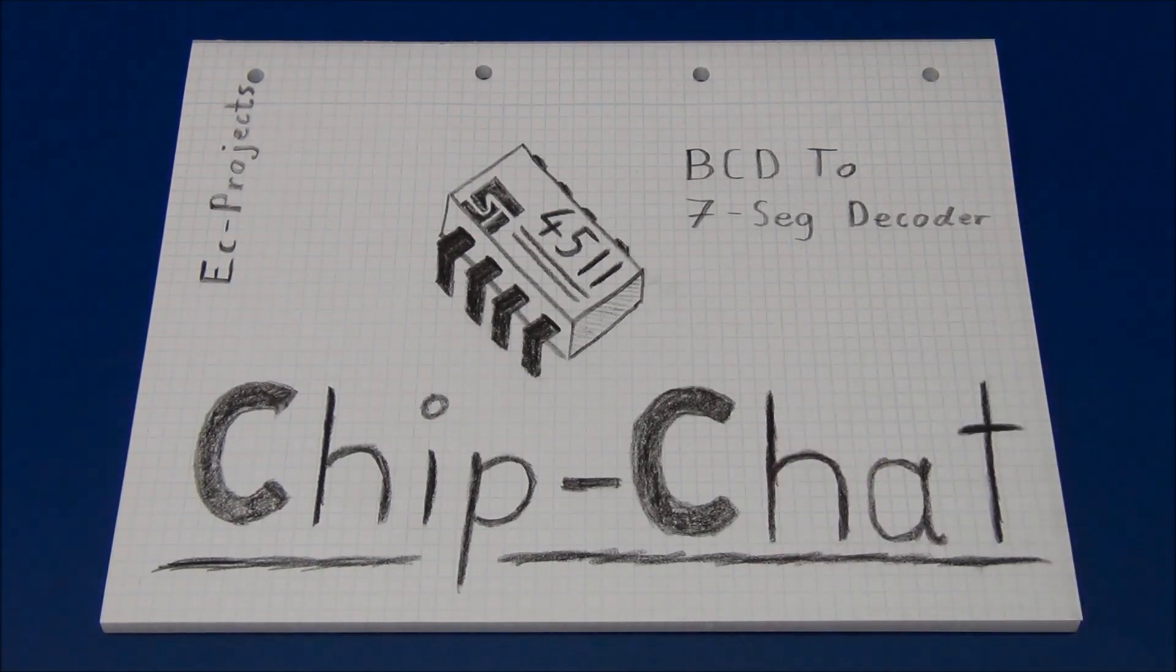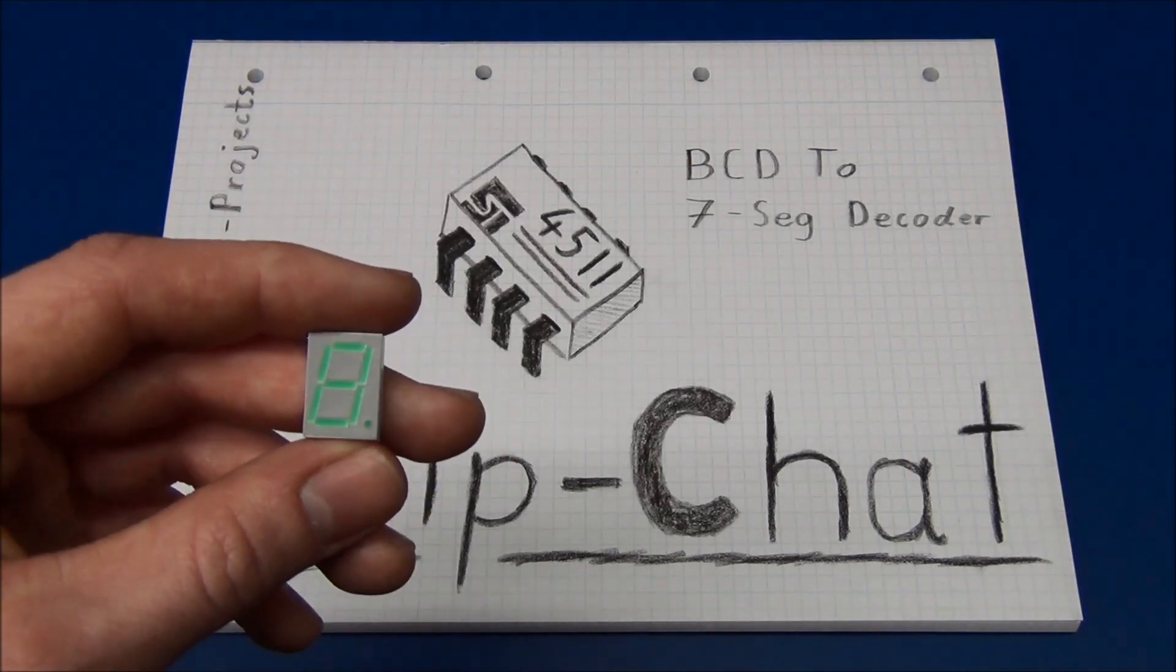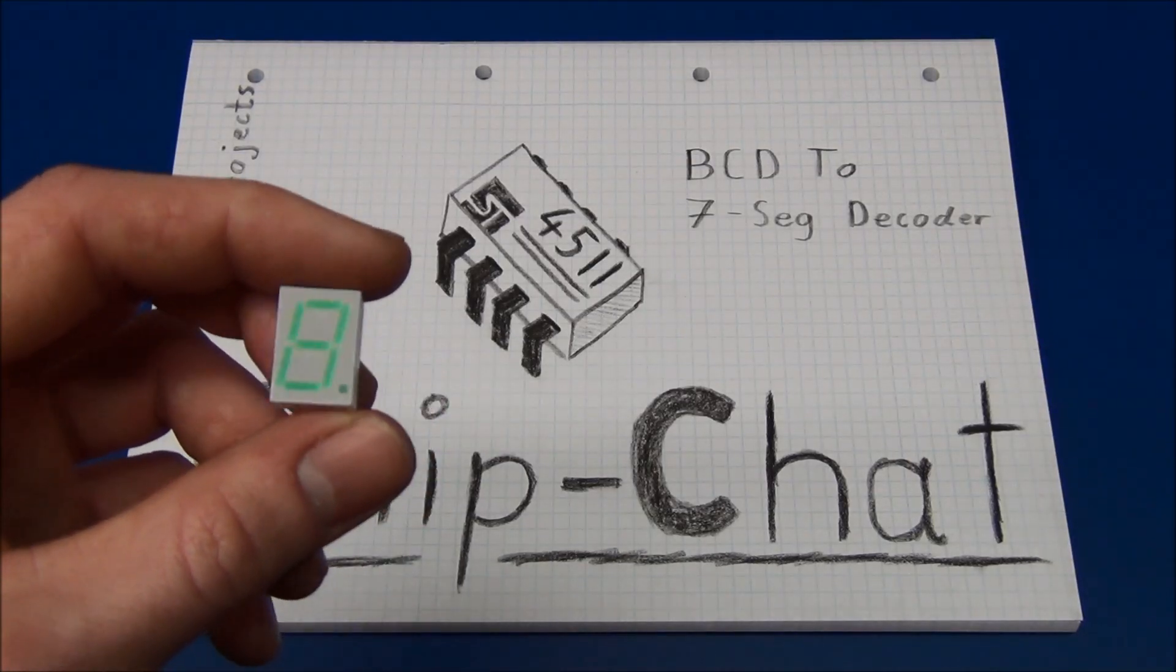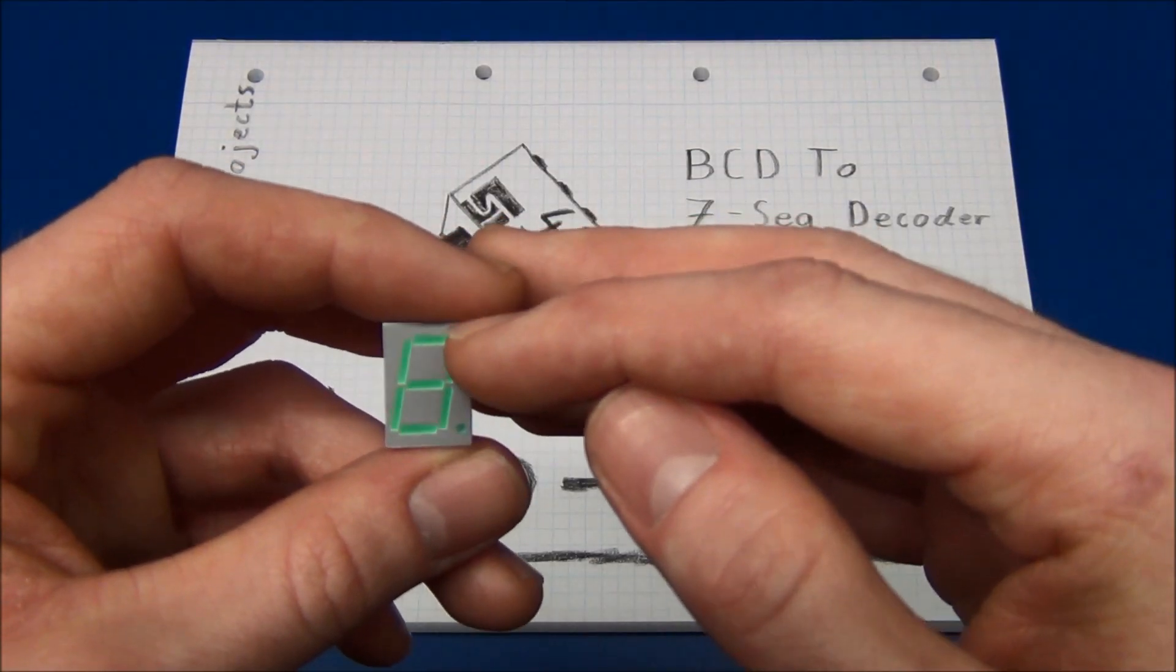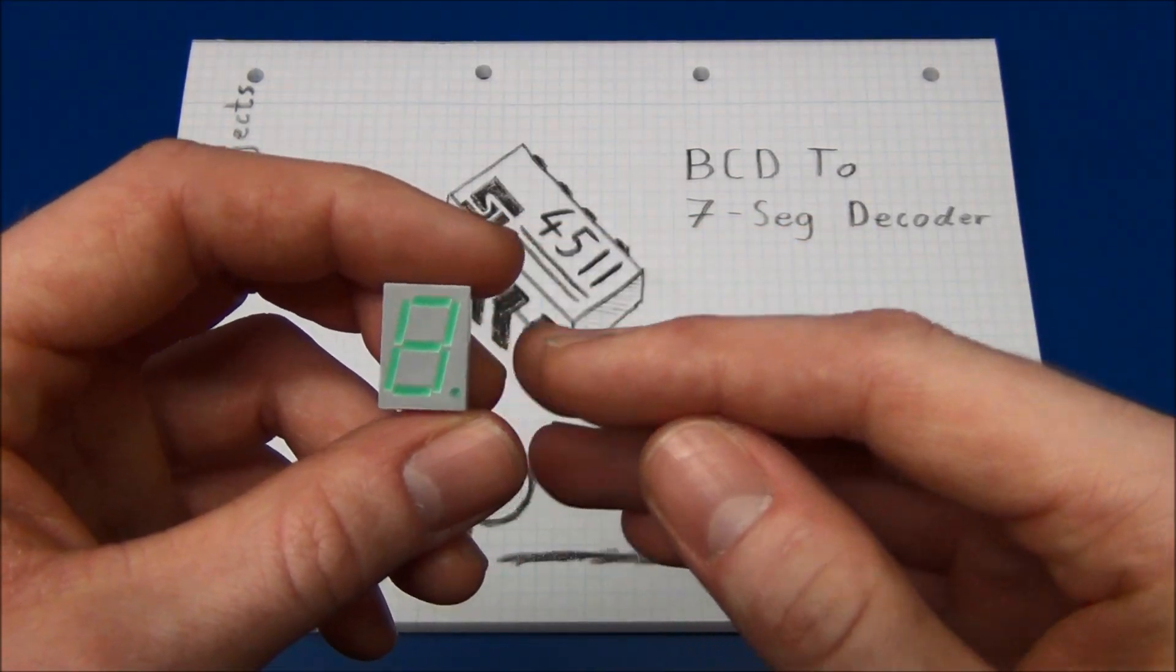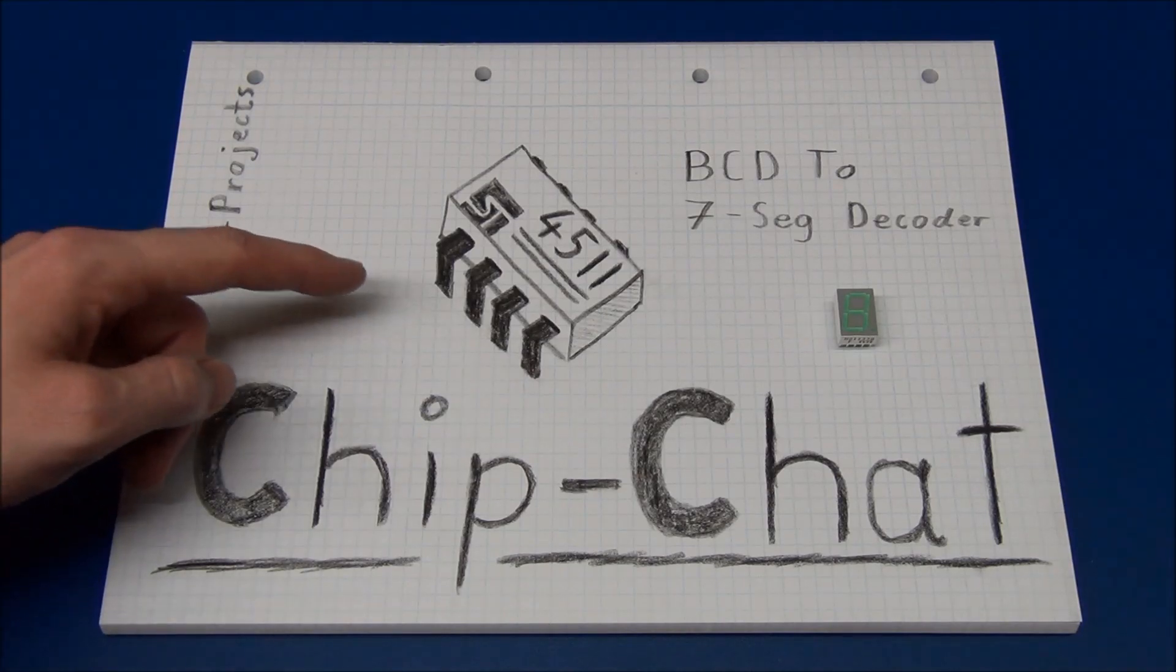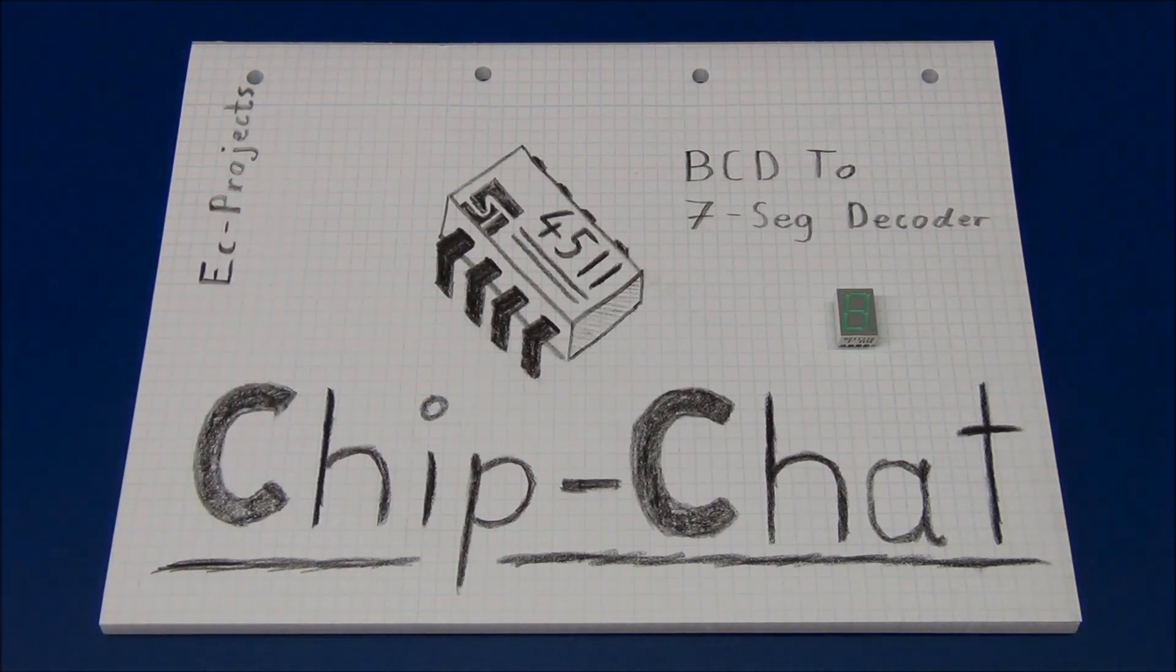All this chip can do is take a given binary number, that's between 0 and 9 in decimal, and convert that into a signal that can drive a 7 segment display. So, let's take a look at the features of this chip and why we would use it.